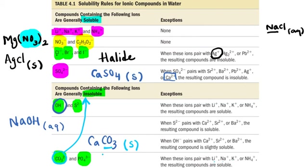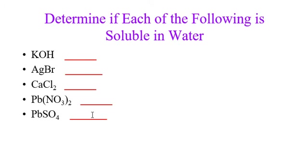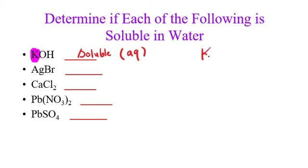Now I may ask you to work on these examples. Potassium hydroxide, KOH — please memorize that if we have group number 1 elements, you just write soluble, (aq). So KOH is (aq), meaning it can be dissolved in water.